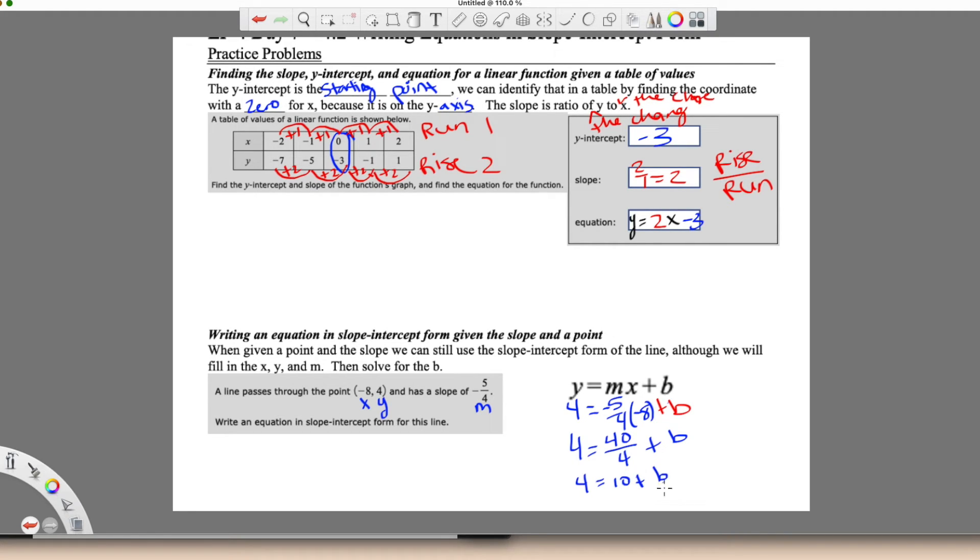And now to get b all by itself all I have to do is undo this addition here. I'm going to subtract 10 from both sides. So I get 4 minus 10 and that's going to give me negative 6. So I get negative 6. 10 minus 10 cancels which is what we wanted because I want b to be all by itself. I just want to know what does b equal.